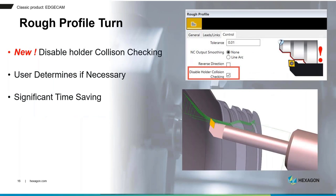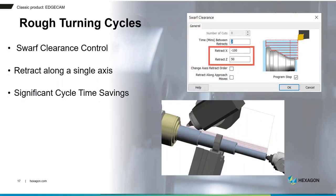In the Rough Profile Turning cycle — where we digitize the casting profile and the tool follows it — calculation can take a long time because EdgeCAM is checking for gouge protection all around the area. In 2023.1, if you know the tool won't gouge because the shape is open and clear, you can now turn off gouge protection. This delivers quite a significant time saving, as we'll see in the demonstration.